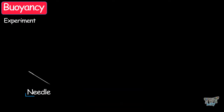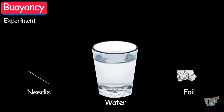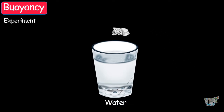Take a needle, a small piece of foil, and a glass of water. Now put the needle in the glass of water — it sinks. Now place the piece of foil on the water. You will see it floats.